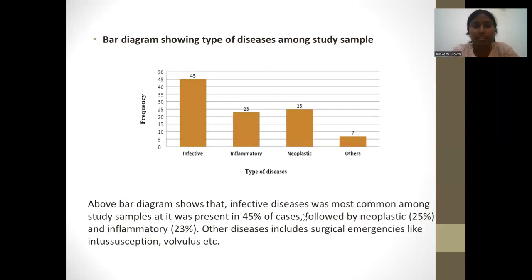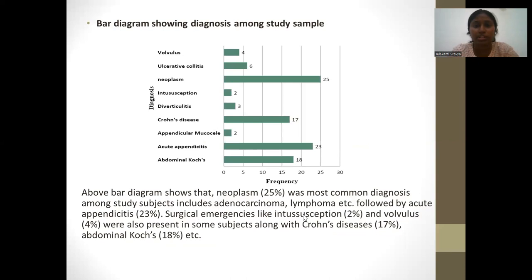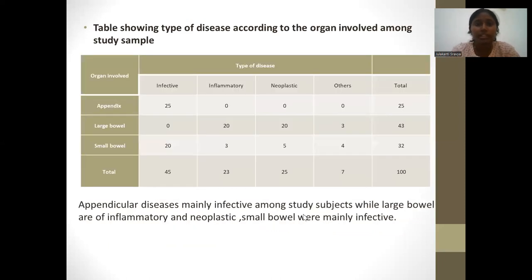This bar diagram shows the type of diseases among the study sample — mostly infective, followed by neoplastic, then inflammatory, and others such as surgical emergencies like intussusception and volvulus. The diagnosis bar diagram shows that neoplasm was the most common diagnosis, including adenocarcinoma and lymphoma, followed by acute appendicitis. Surgical emergencies like intussusception and volvulus were also present, along with Crohn's disease at 17% and abdominal tuberculosis at 18%. The table shows that appendicular diseases were mainly infective, large bowel included both inflammatory and neoplastic, and small bowel diseases were mostly infective.